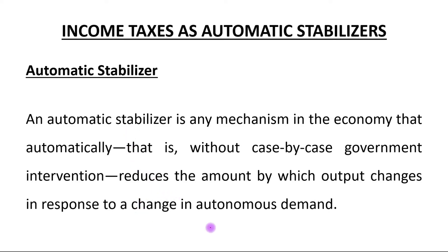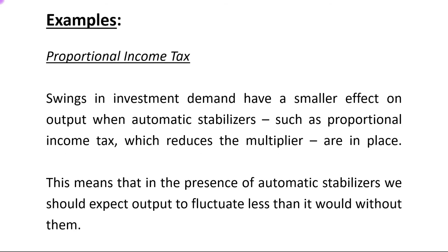Examples: First example is proportional income tax. Swings in investment demand have a smaller effect on output when automatic stabilizers such as proportional income tax are in place.